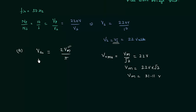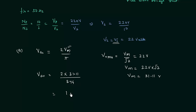Now we can calculate the DC voltage. V_average = 2 × 31.11 / 3.14 = 19.81 volts. This is the answer for Part A.